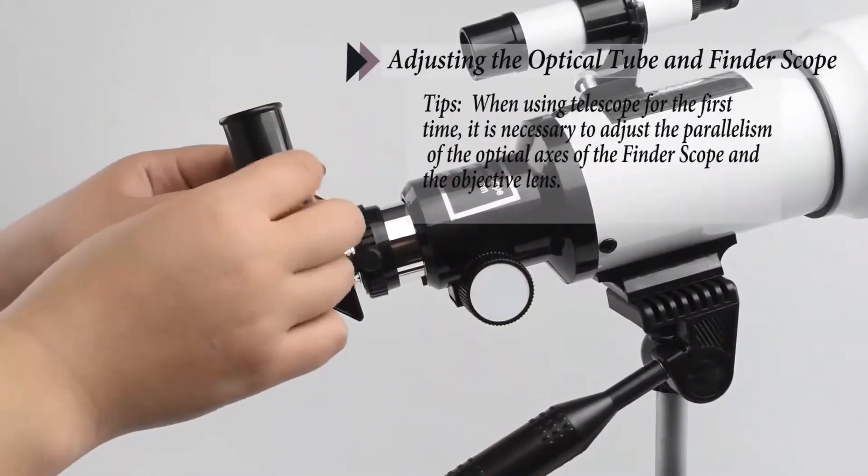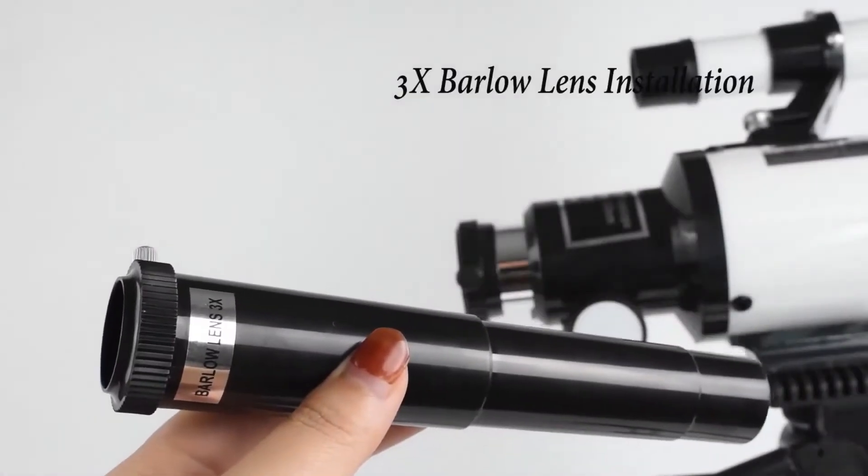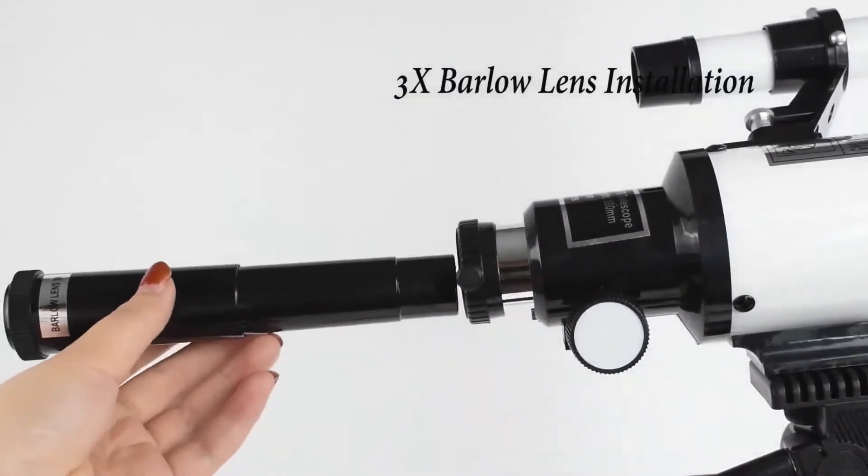When a high magnification observation is required, a 3x multiplier can be inserted between the eyepiece and the diagonal mirror.